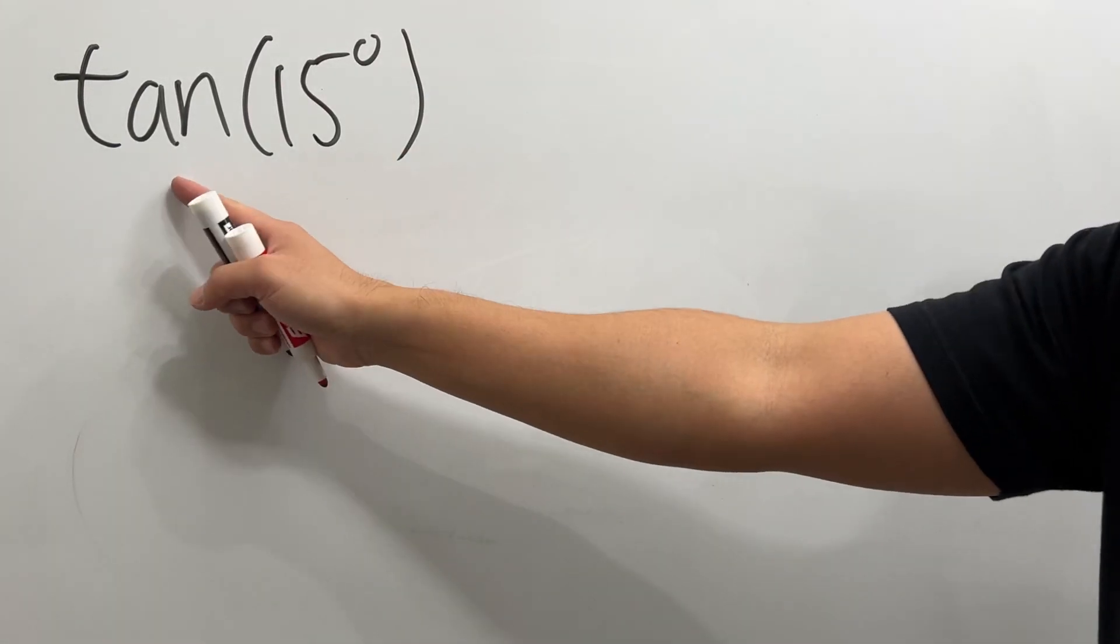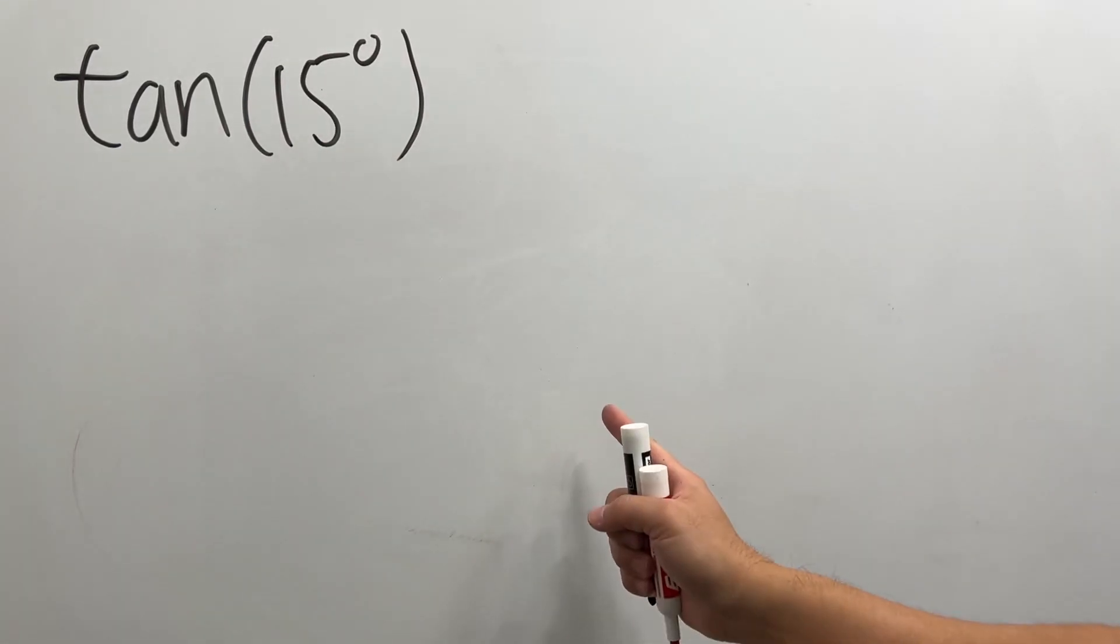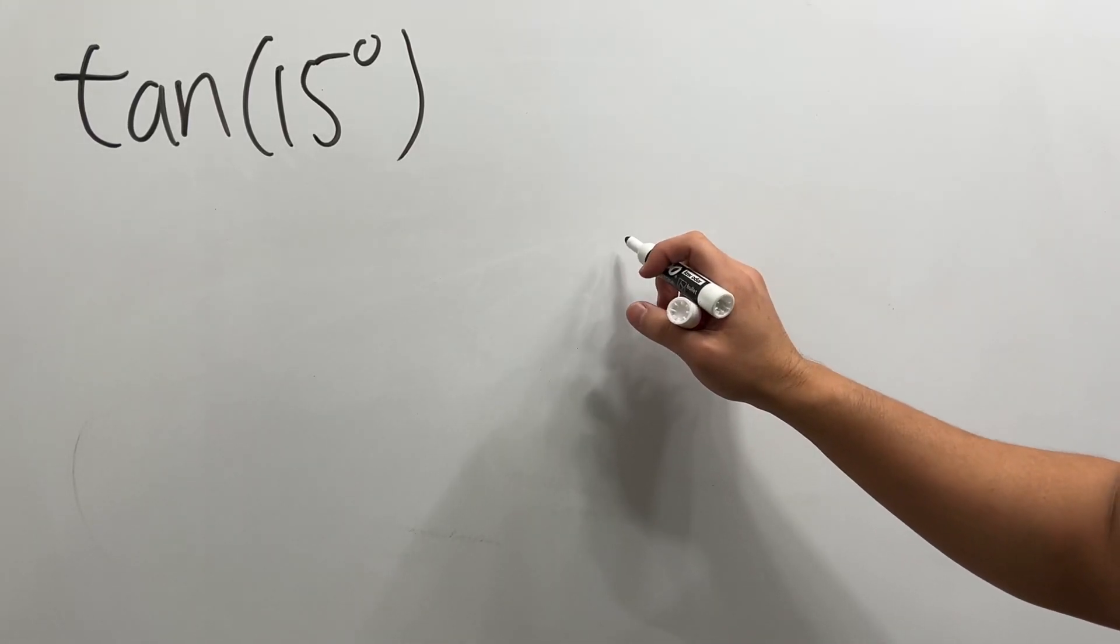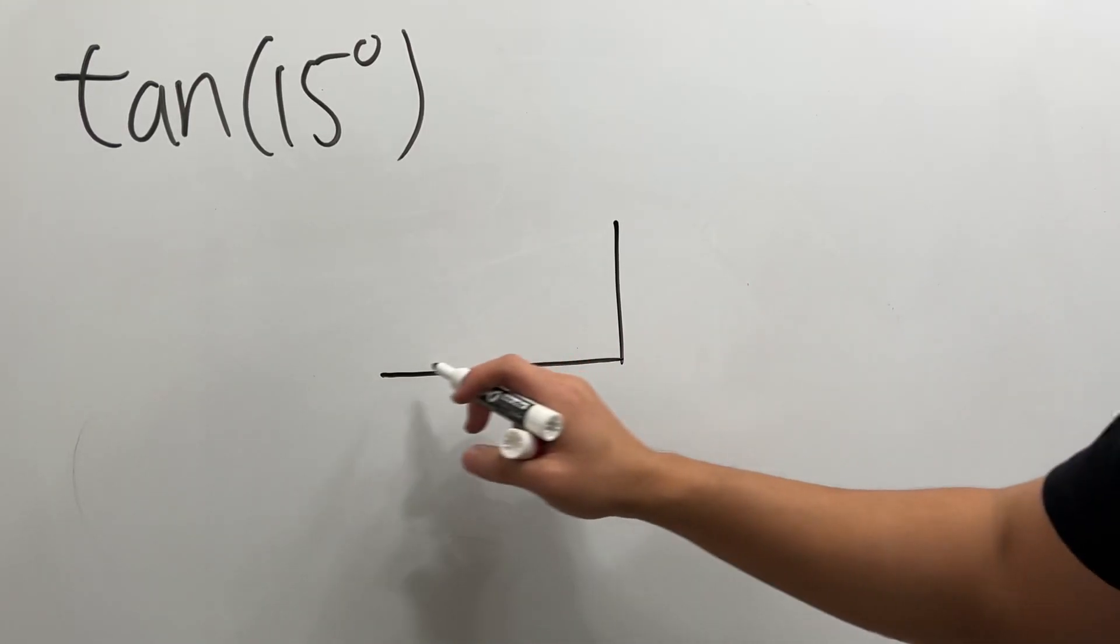Let me show you how we can evaluate tangent of 15 degrees with a special right triangle. First, we start with our 30-60-90 special right triangle.